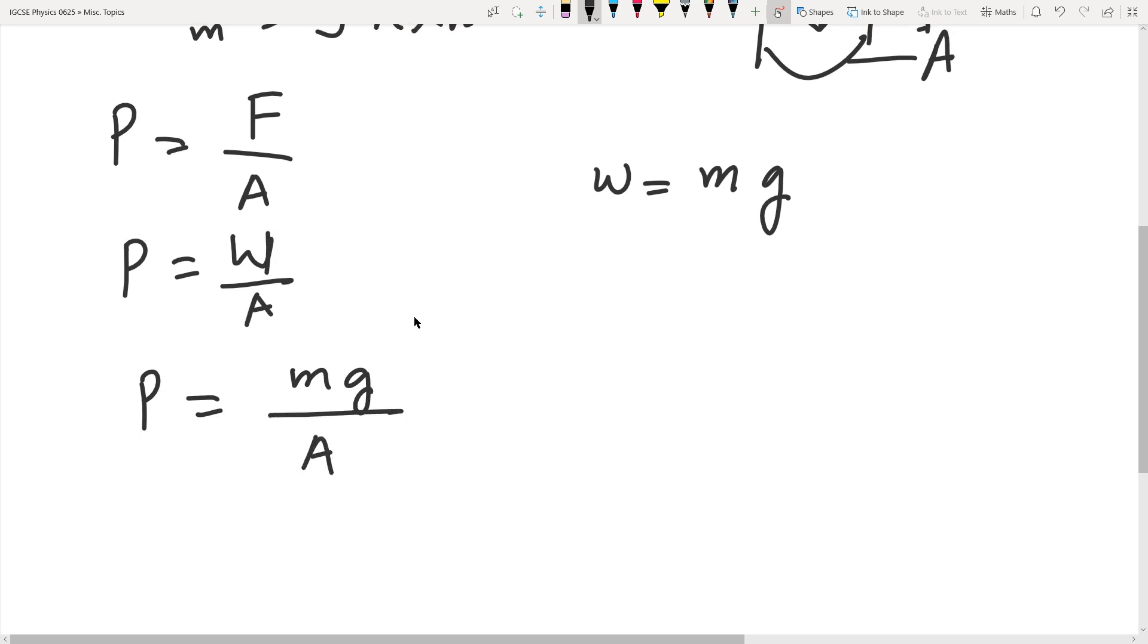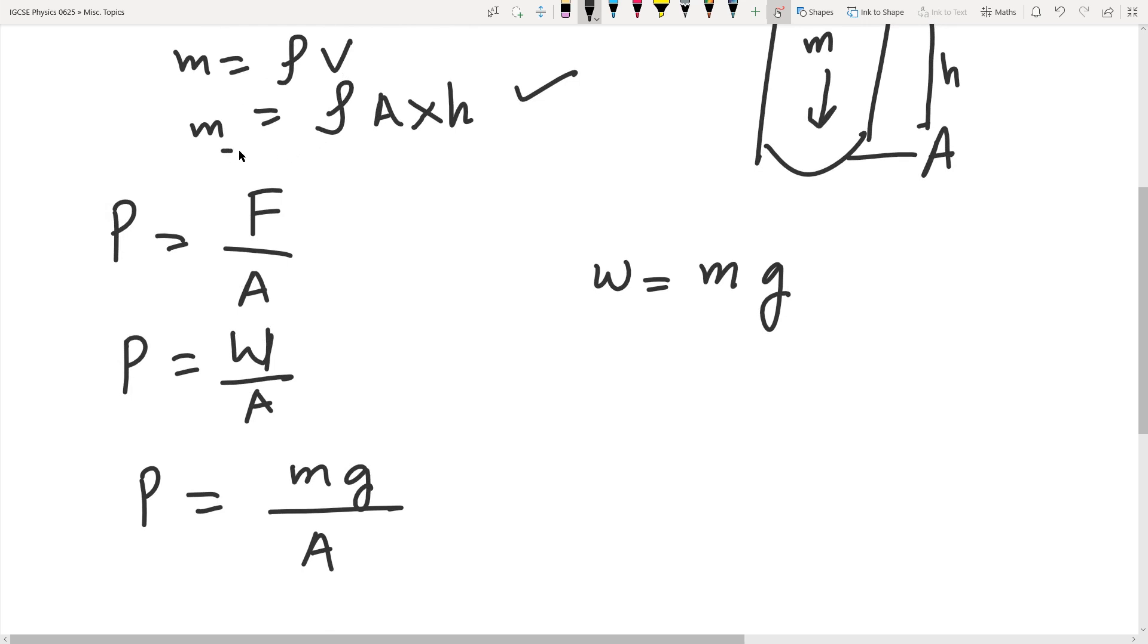Pressure is mg over area. We just made this relationship, so we can replace this mass by ρ times area times height of the water column, divided by the area and multiplied by g. We can cross off this A, so what we get in the end is ρgh.